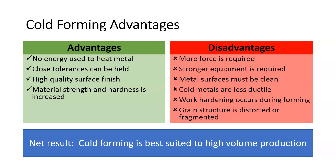We can also have closer tolerances being held, because we don't have the expansion and contraction — the shrinking — that we inevitably get when a metal cools down from above recrystallization temperature. Metals shrink when they cool down. The only substance known to man that expands as it changes from liquid to solid is water. So if you're not heating it up, you don't have any of that shrinkage. You also get a higher quality surface finish, no oxidation, and you increase the material strength and hardness with cold forming.